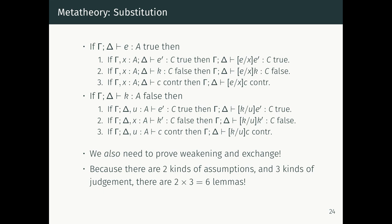To investigate further, we need to do meta-theory to establish the properties of the classical calculus. This is a nuisance because we have two contexts and three judgments, giving two times three equals six substitution lemmas: if E has type A, you can substitute it for a value variable of type A across all three judgments; and if K is a refutation of A, you substitute it for a refutation variable across those three judgments. Since you must prove weakening and exchange first, that's actually 18 lemmas — none difficult, but numerous.